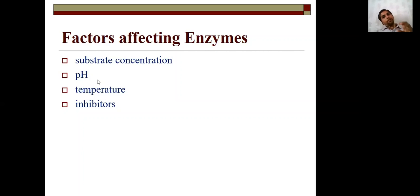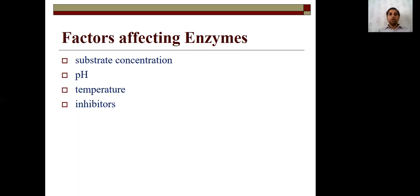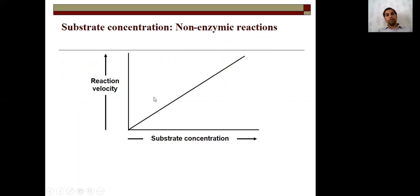Just like pH: some enzymes work at a particular pH, and if the pH is higher or lower than that optimum, the enzyme either won't work or won't achieve enough activity. Inhibitors — which we discussed in the last lecture — are of two types: competitive inhibitors and non-competitive inhibitors. Their function is to inhibit enzyme activity. All these factors affect enzyme activity.